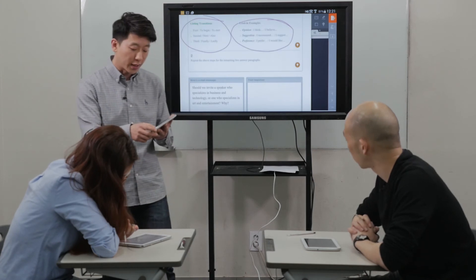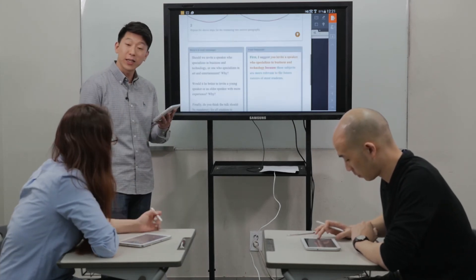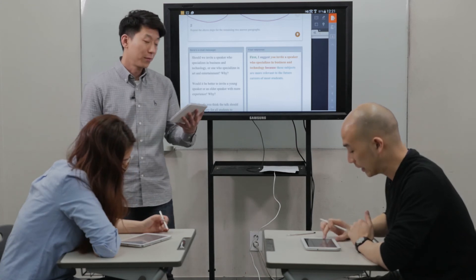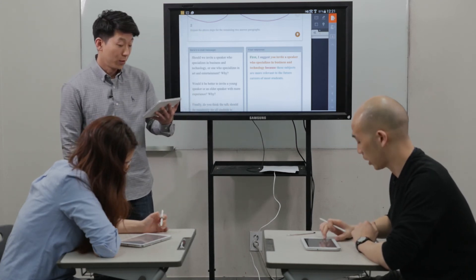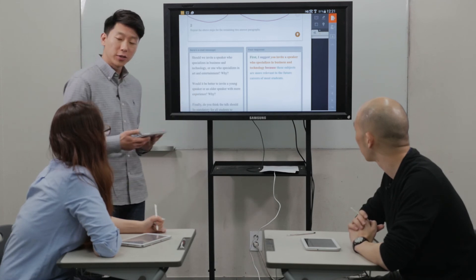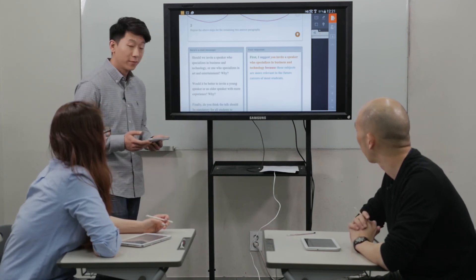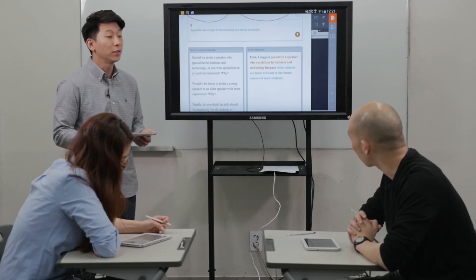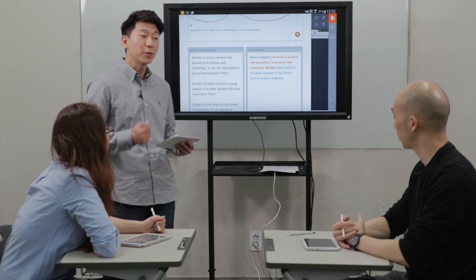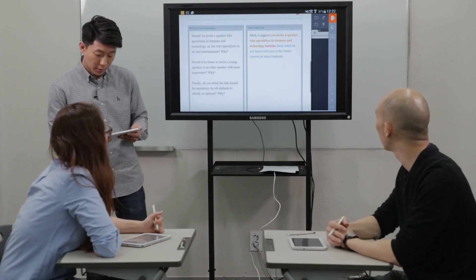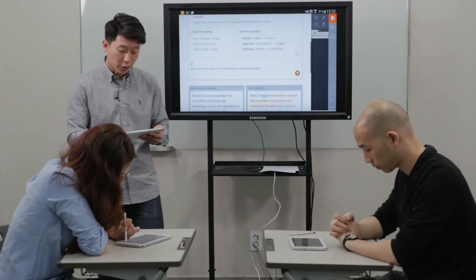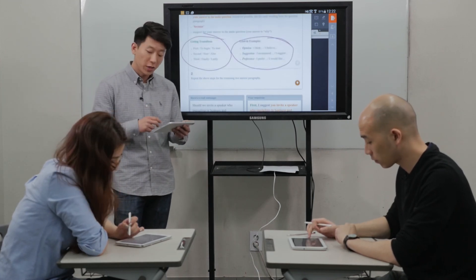So let's take a look here and see which ones they use. Jane, what is the first thing that they need? A listing transition. Do we have one? Yes. What is it? First. Good. Second thing, Isaac, what do we need? A lead-in. And what do they use? They use 'I suggest.' And then, Jane, what do they have to do? Answer the main question. And did they answer the question? Yes. What was their answer? They are going to invite a speaker who specializes in business and technology. Good. And then we use what word to connect, Isaac? Because. And what do you have to do after the because, Jane? We need to support our answer to the main question. How have they supported their answer? They said these subjects are more relevant to the future careers of most students. Great job, guys. So after we do the first question, we're going to repeat it for all the other paragraphs.